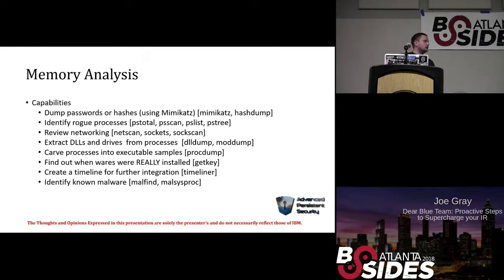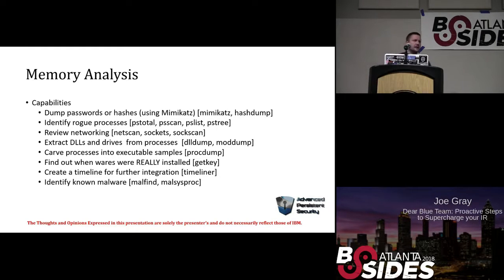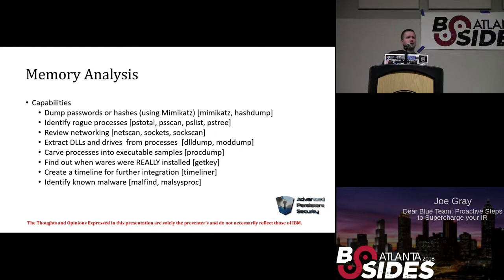Rogue processes — there's really cool stuff with PScan, PStree, all of that. With PStree, it will actually create a dot file that you can convert to an image like a PNG, and it will color-code processes you should look at more thoroughly — making more efficient use of your time. DLLs — you can carve those out and upload them to VirusTotal. If it has a signature, great. If VirusTotal has never seen it, get a hash and put it into a threat intel feed. The get_key plugin shows when things were really installed. MalFindMouse and MalfindProc will review several other plugins heuristically and give you a true/false sense of whether it meets the check. If you see a lot of false results, it's probably worth taking a closer look.